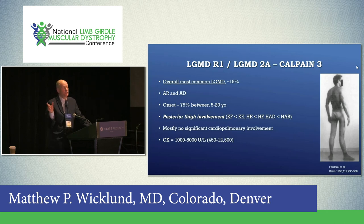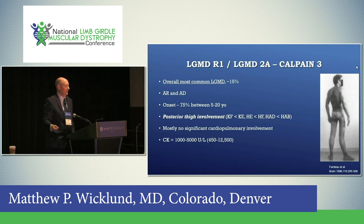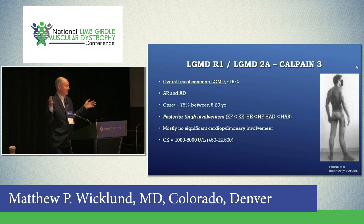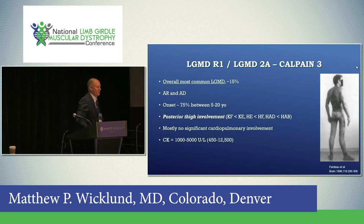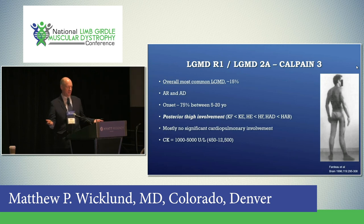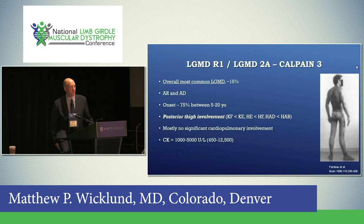A classic example: a 17-year-old still on the basketball team with a deadly three-point shot. On examination he can do a full squat, but he has no strength in his hamstrings or glutes to lift his leg — they're completely wasted. This pattern of weakness — knee extensors much stronger than knee flexors, hip flexors much stronger than hip extensors, hip abductors much stronger than hip adductors — goes with calpainopathy.